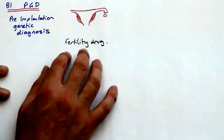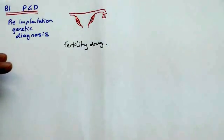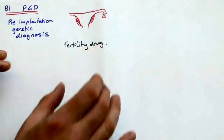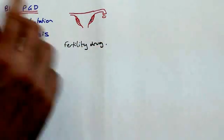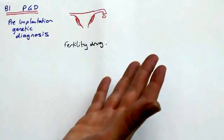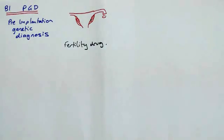What we want to do here is to get quite a few eggs released because we want to fertilize them all. We want to give ourselves the best chance of getting a fertilized egg without a particular genetic condition. So by giving fertility drugs you may release 6, 7, 8 eggs at once.